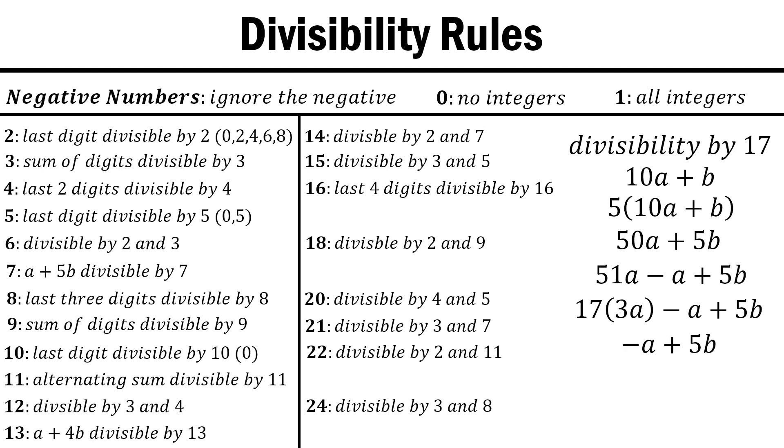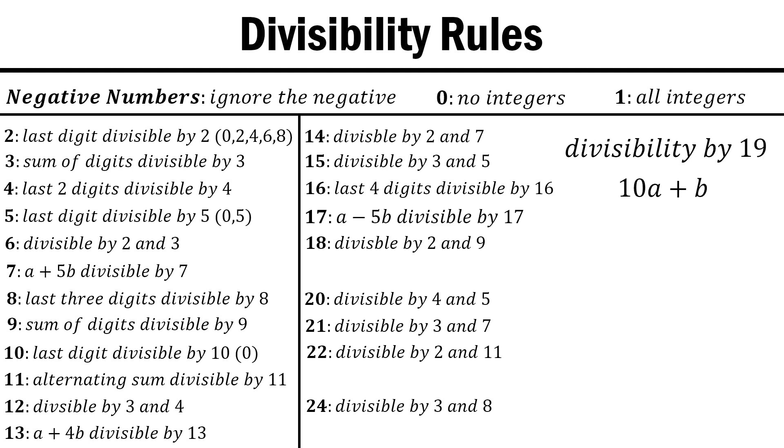Since a is potentially a really big number, we really don't want to make it negative, so we use our negative number rule from before to multiply this expression by negative 1 and get a minus 5b. For 19, we multiply 10a plus b by 2 to get 20a plus 2b.